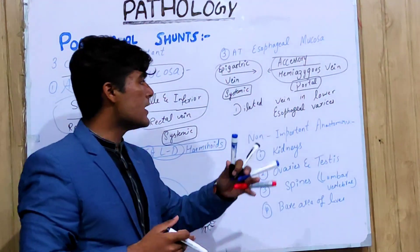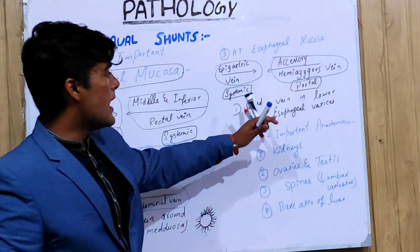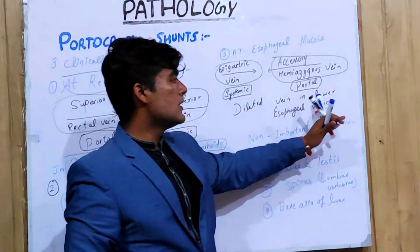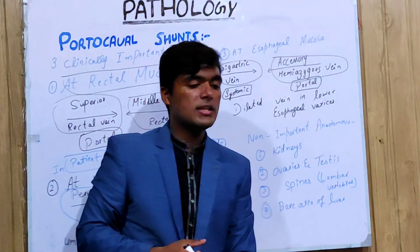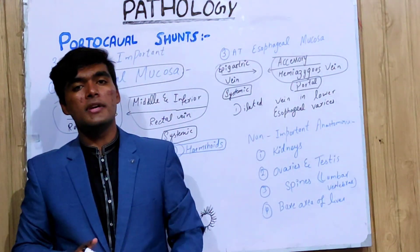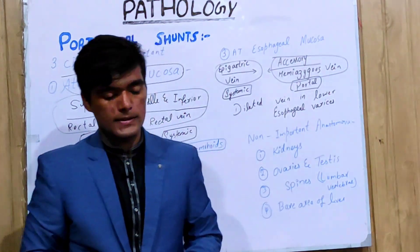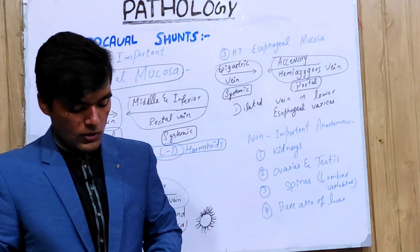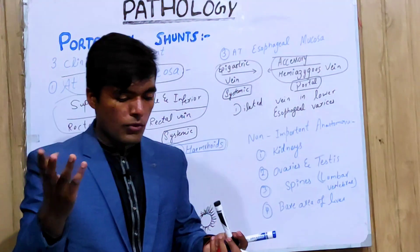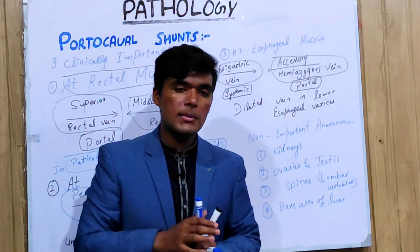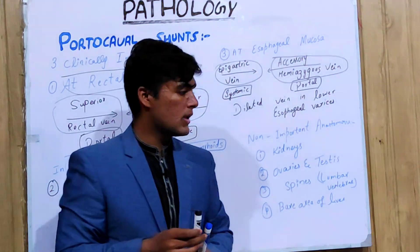The third clinically important point is at the esophageal mucosa: from the systemic side the epigastric vein, and from the portal side the accessory hemiazygos vein. The shunt that develops here is seen as dilated veins in lower esophageal varices.